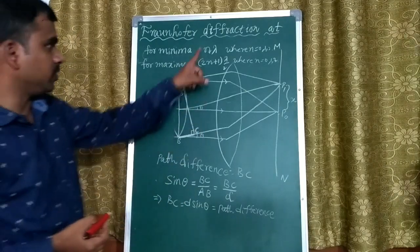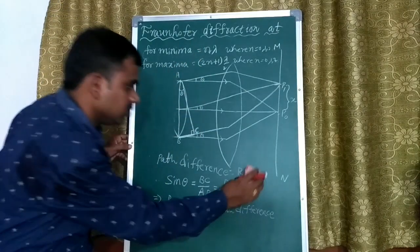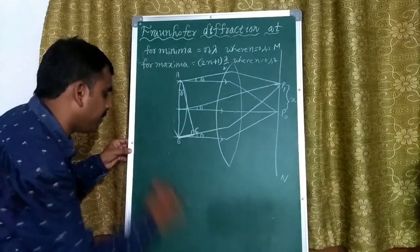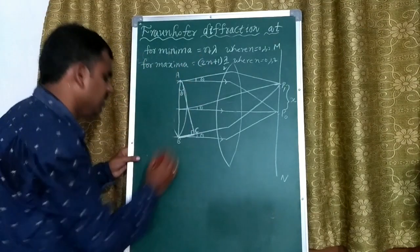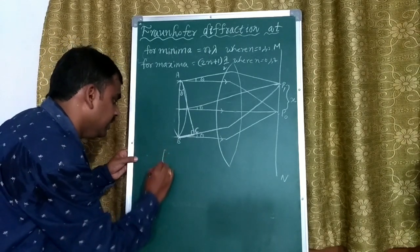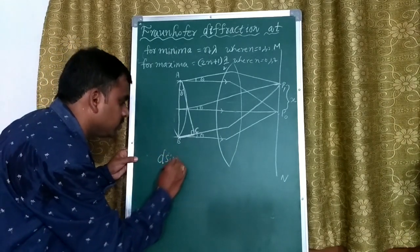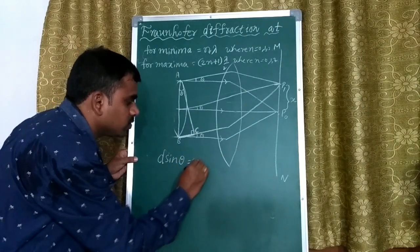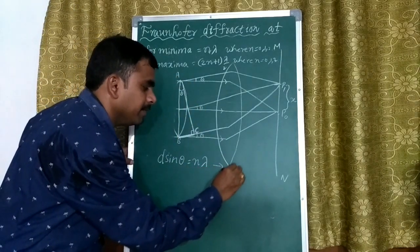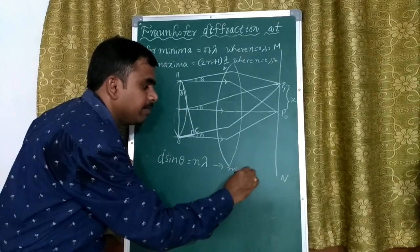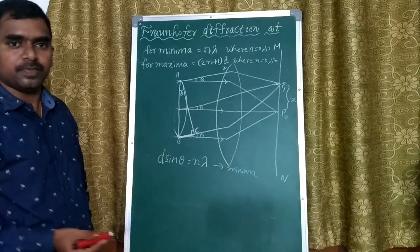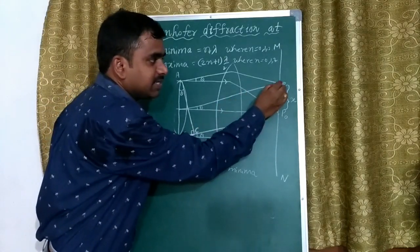Equating our path difference with the minimum intensity condition: D sin θ = nλ. This is the condition for minimum intensity. At the minima, we observe darkness.